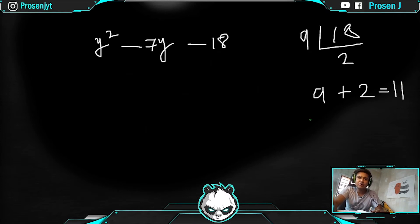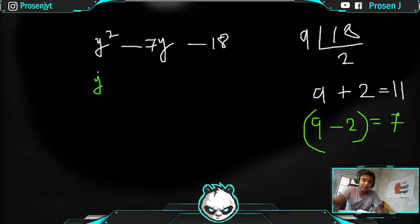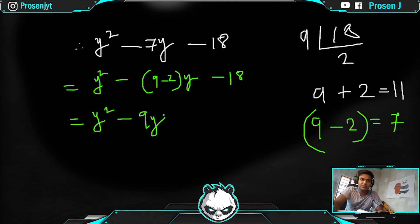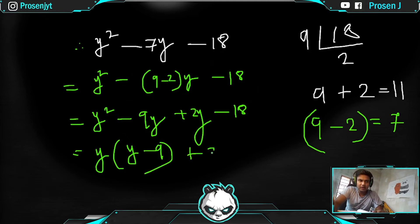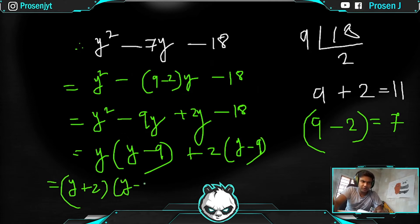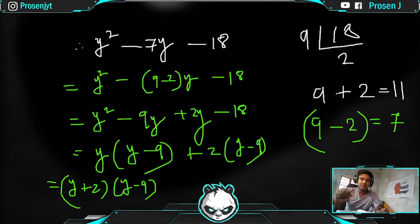Since 9 + 2 = 11 doesn't work, we try subtraction: 9 - 2 = 7. So we write y² - 9y + 2y - 18. Grouping: from the first pair take y common to get (y - 9); from the second take 2 common to also get (y - 9). The final answer is (y + 2)(y - 9).